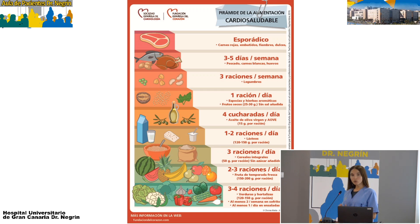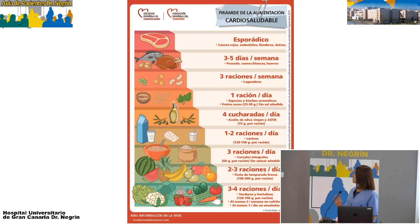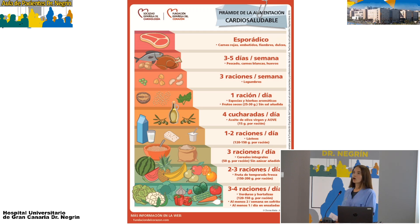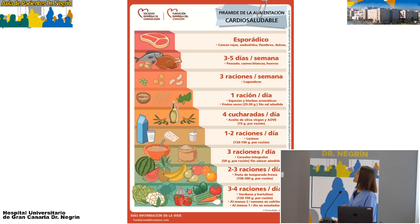A continuación, las legumbres. Son una fuente de fibra muy buena y también de proteína vegetal. Con legumbres nos referimos a todo lo que es el grano: judías, garbanzos, lentejas, guisantes. Se recomienda mínimo unas tres veces por semana. Pero ojo, también influye la forma en que cocinamos las legumbres. No es lo mismo una judía a la vinagreta que una garbanzada con chorizo y chistorra. Que también se puede comer de vez en cuando, pero no habitualmente.